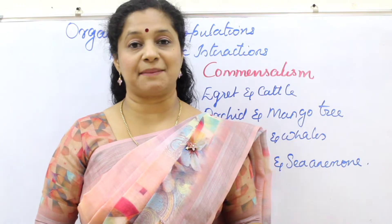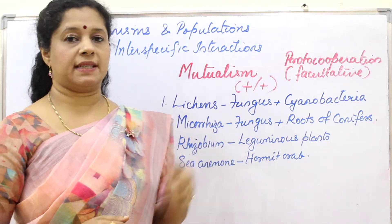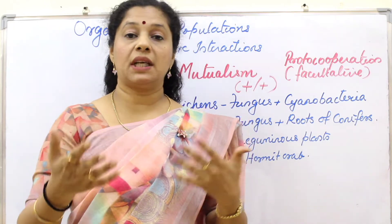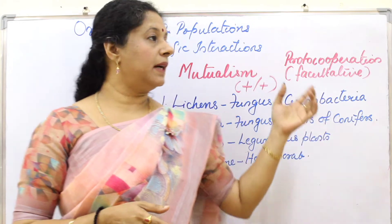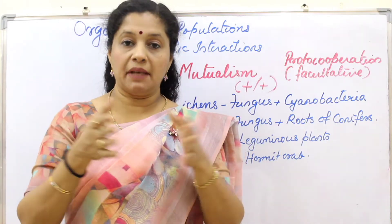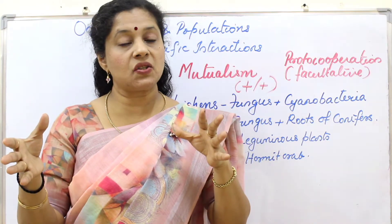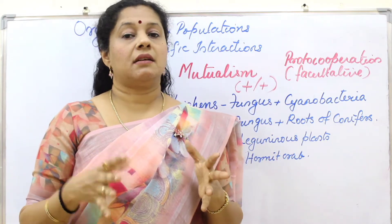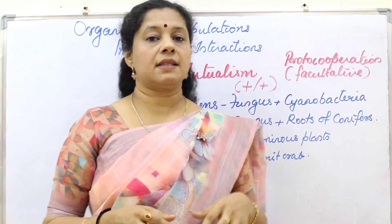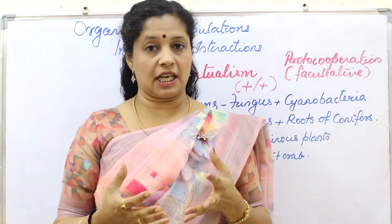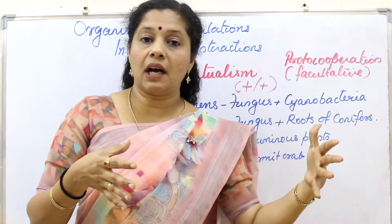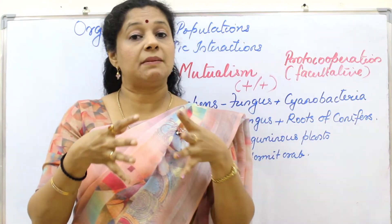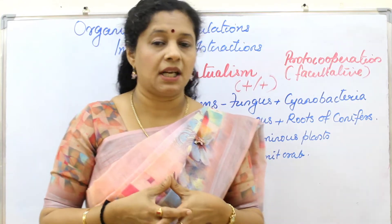So those are our examples of commensalism. The next inter-specific interaction to study is mutualism, which can be of two types. Mutualism basically means two species are interacting such that both are benefiting each other. The first type is called proto-cooperation — both benefit one another, but if the other species is not there they can still live independently. This is called facultative mutualism. The second type is obligate mutualism, where without the counterpart the other species cannot survive — independent living is not possible.